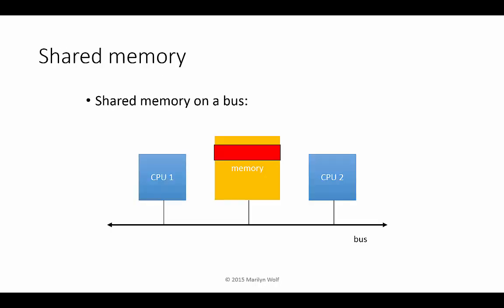In shared memory, we can think of two processors on a bus, but we can also use shared memory to communicate between processes on a single CPU. CPU1 writes a value into the shared memory location, and that location can then be read by CPU2.